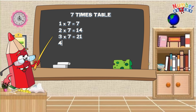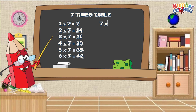4 times 7 is equals to 28. 5 times 7 is equals to 35. 6 times 7 is equals to 42. 7 times 7 is equals to 49.